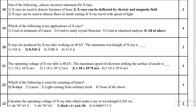X-rays produced by an x-ray tube working at 40 kV have a minimum wavelength of 0.310 angstrom. The operating voltage of the x-ray tube is 40 kV; the maximum speed of electrons striking the anode surface is 1.18 × 10⁸ meter per second.